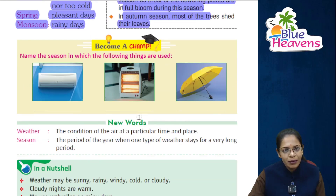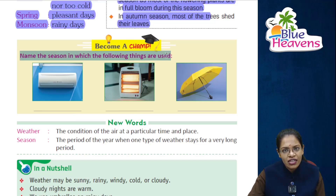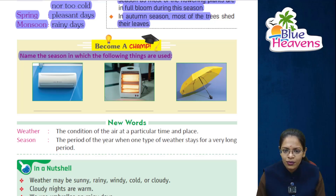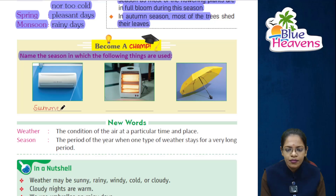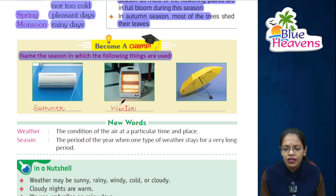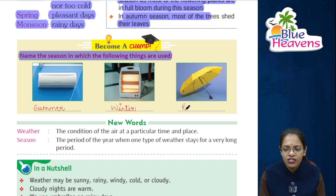Now become a champ and let's do an exercise. Name the season in which the following things are used. Students, look at the images and identify in which seasons the things are used. First is the AC — air conditioner — which we use in summer season. Next image is the heater, used in winter season. Next image is the umbrella, used in monsoon or rainy season.